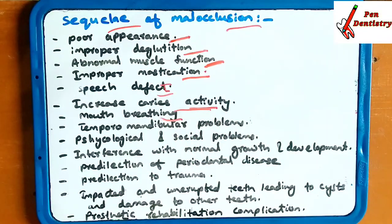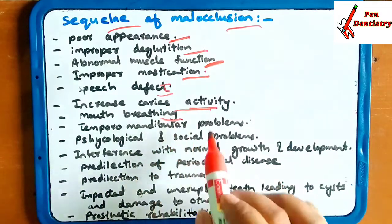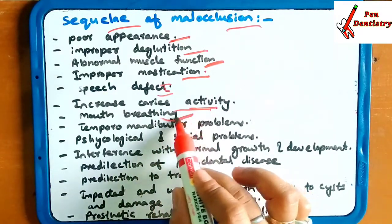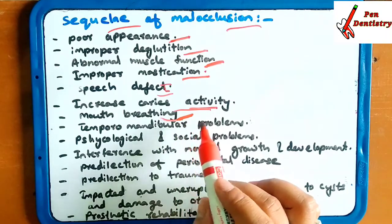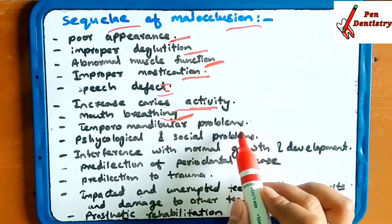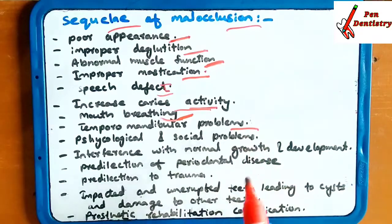Mouth breathing — if a person is not able to close the mouth properly, he or she will breathe through the mouth. Temporomandibular problem — TMJ problems will be occurring.